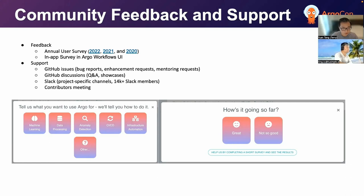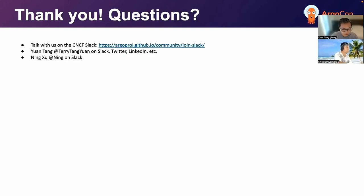On GitHub, we have different issue templates for bug reports, enhancement requests, mentoring requests, and so on. We also opened GitHub discussions for Q&As and showcases that are easily searchable on GitHub. There are different Slack channels for different Argo sub-projects in the CNCF Slack Workspace with over 14,000 members. We host regular contributor meetings to help new or existing contributors. If you have any questions, you can find us on the CNCF Slack and on various social media. Thank you for listening and see you around at ArgoCon.